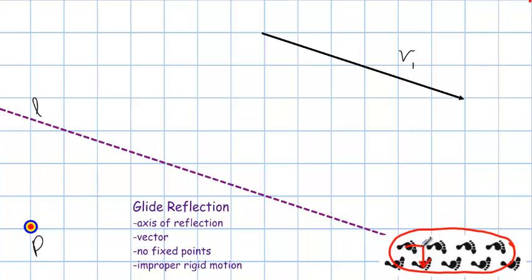Let's perform the glide reflection on point P. First you use the axis of reflection. Now it doesn't really matter, you can do the vector first or the reflection first in either order for a glide reflection. But let's do the reflection first on this point.